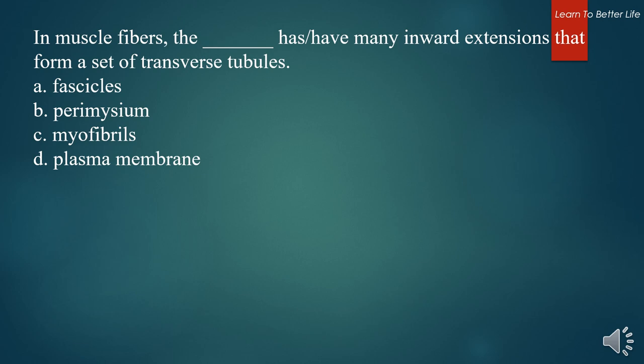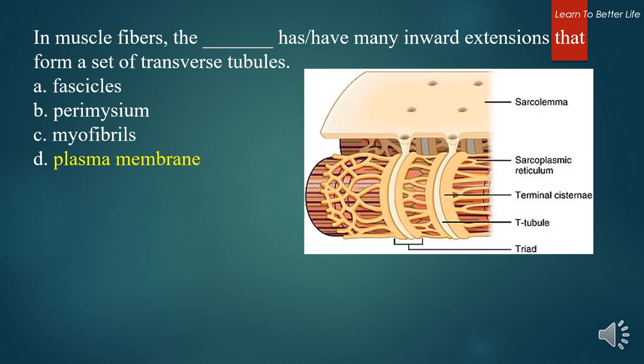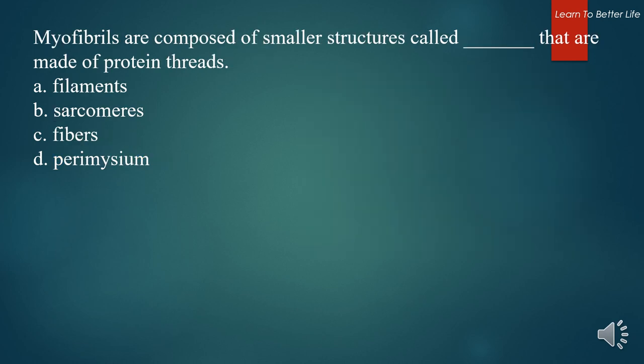In muscle fibers, what has many inward extensions that form a set of transverse tubules? A. Fascicles. B. Perimysium. C. Myofibrils. D. Plasma membrane. The answer is D. Plasma membrane. Myofibrils are composed of smaller structures called what, that are made of protein threads? A. Filaments. B. Sarcomeres. C. Fibers. D. Perimysium. The answer is A. Filaments.